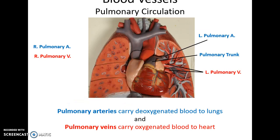In pulmonary circulation, blood enters the pulmonary trunk, then splits between the right and left pulmonary arteries to the lung tissue to become oxygenated, and travels via the pulmonary veins back into the left atrium. The color blue indicates a vessel carrying deoxygenated blood, and red indicates oxygenated blood — though blood is always red.